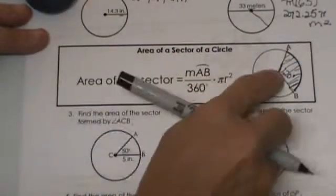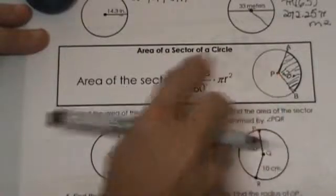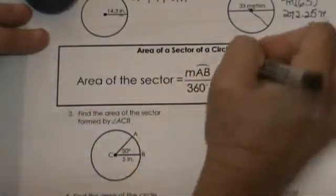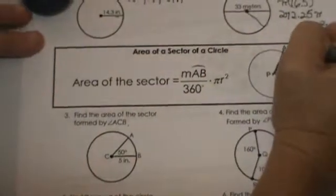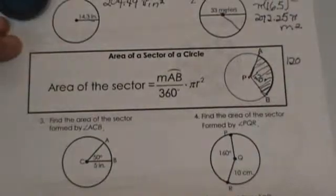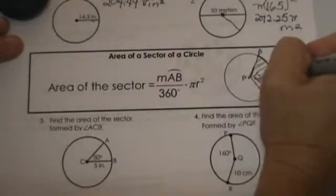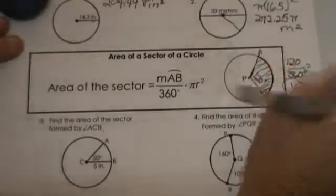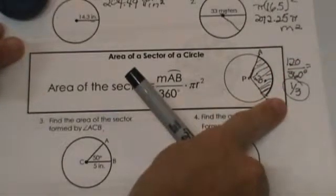The measure of the arc is the same as the central angle, so we would plug in 120 as our angle. So in this case we would have 120 over 360, so that represents one third of the area of the circle.